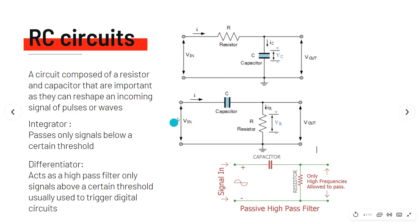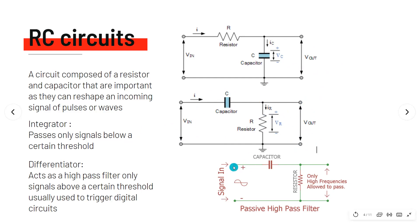The second circuit is the differentiator circuit, where we have our voltage in, then our capacitor and resistor, and then our voltage out. This will only allow signals above a certain threshold to pass through and be read at voltage out. The illustration shows that only high frequencies are allowed to pass through — this is a passive high-pass filter. All these circuits you can assemble yourself; the circuit diagrams are provided here.